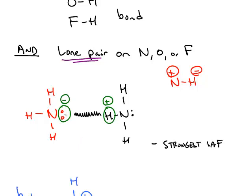That lone pair is negatively charged and attracted to the positive hydrogen. Hydrogen is positive because of the electronegativity difference compared to nitrogen. So this is the hydrogen bonding between two separate NH3 molecules. This is the strongest out of all three intermolecular attractive forces.